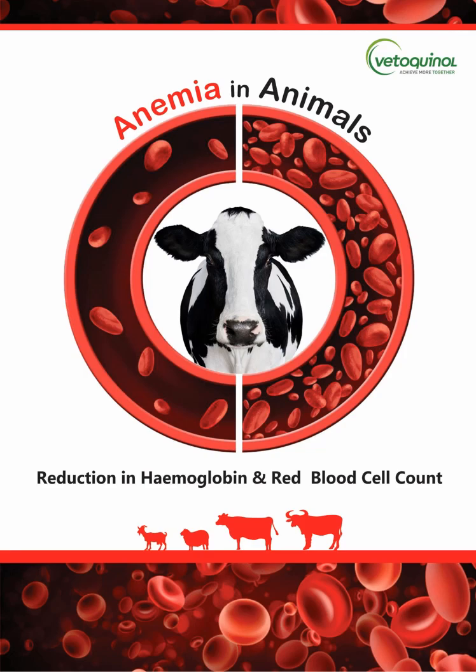Anemia is the most common problem of farm animals. It is the reduction of hemoglobin and red blood cell count.